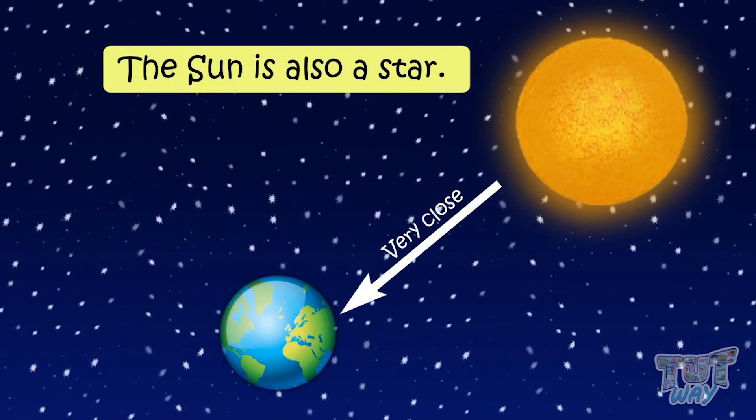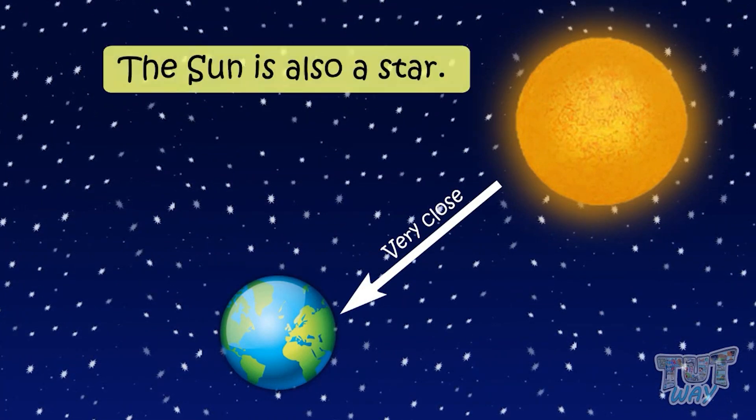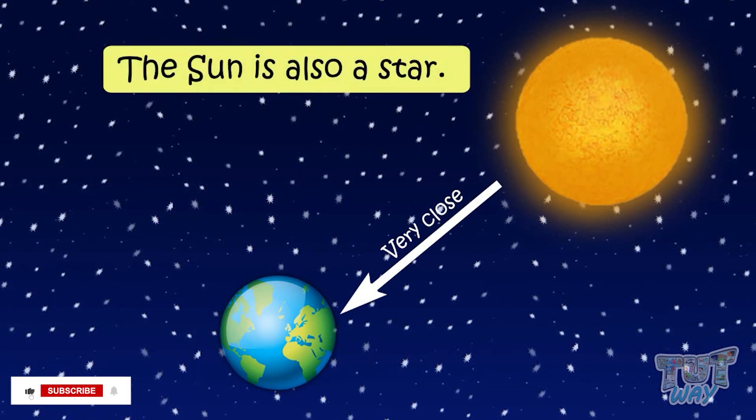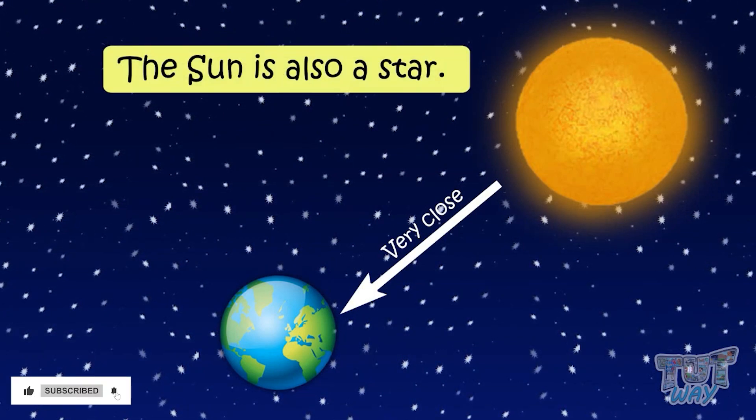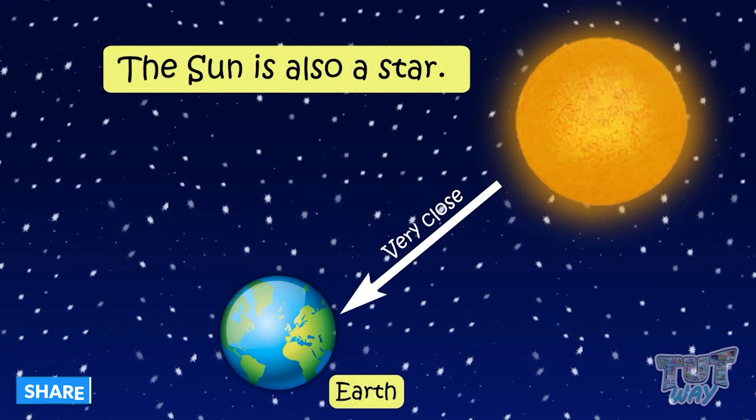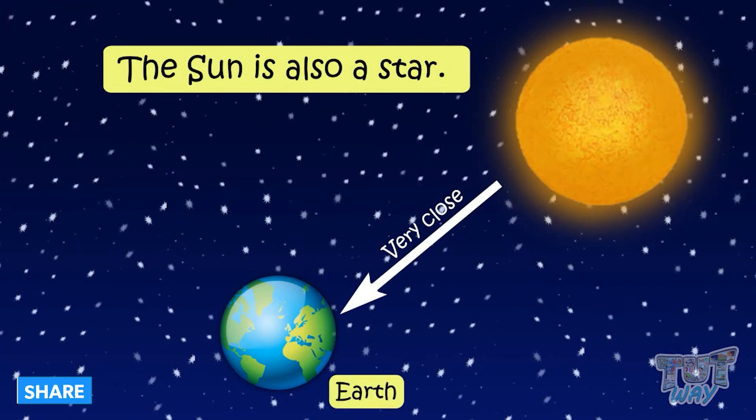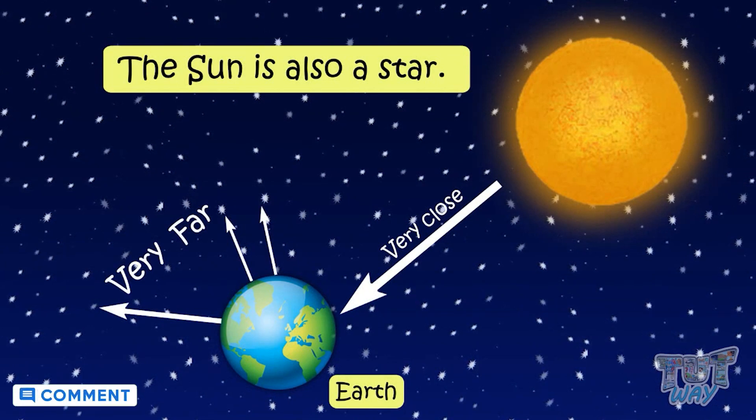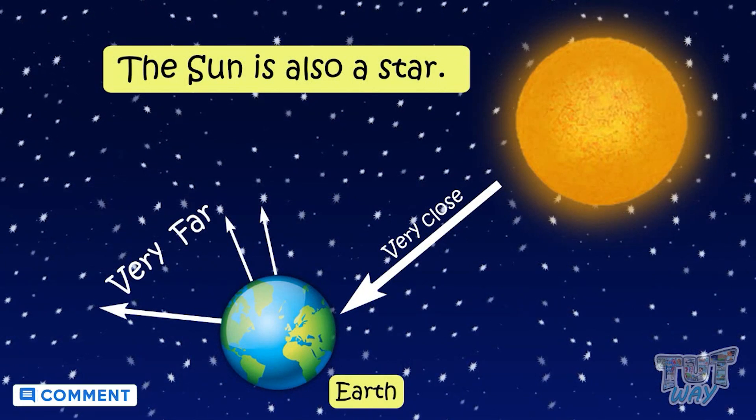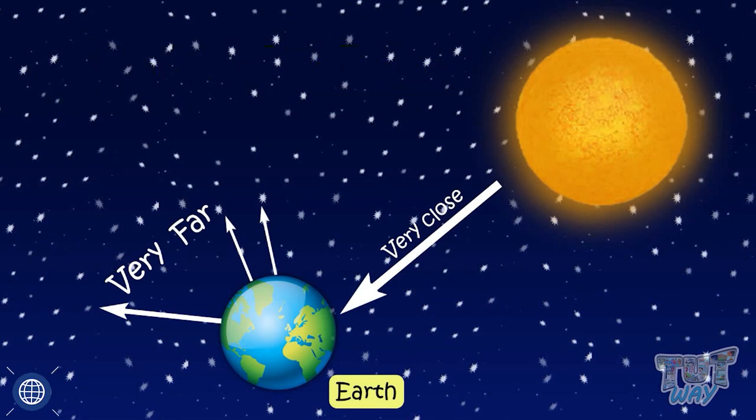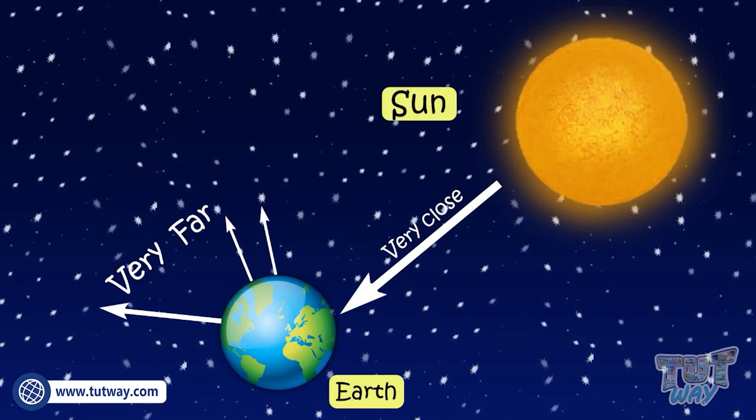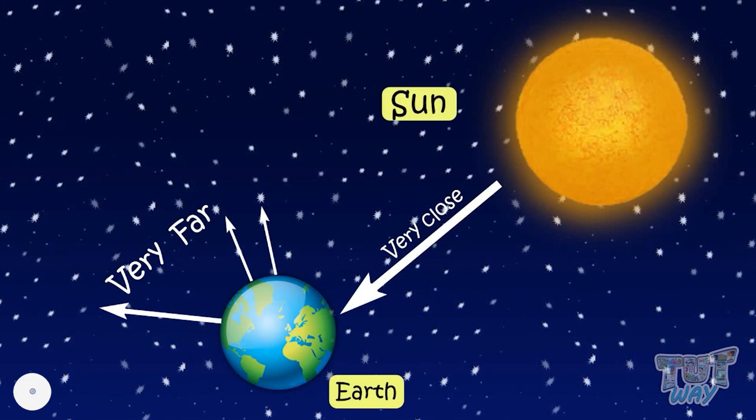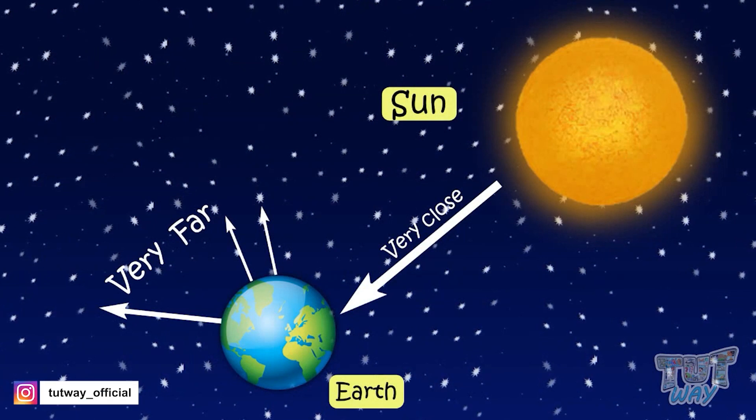So remember, sun is also a star, but it is very close to our Earth. And the stars that we see at night are very, very far from our Earth. So we can say the closest star to our planet Earth is sun and sun gives us heat and light.